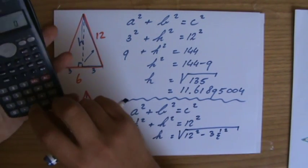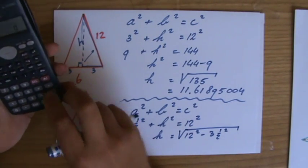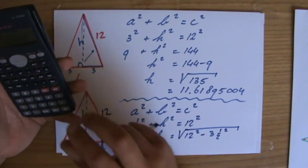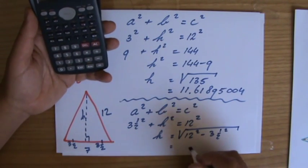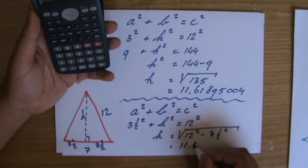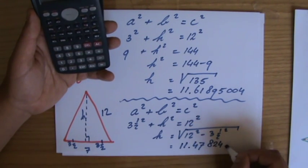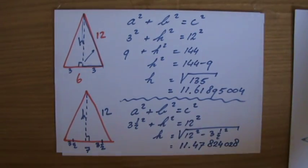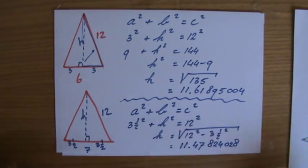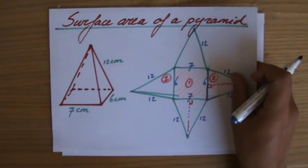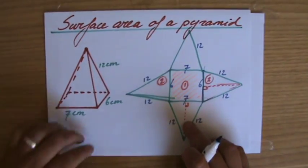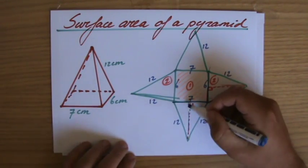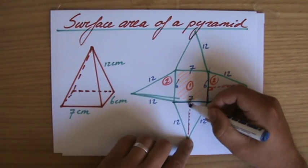I'm going to take my calculator. 12 squared, which of course is 144 minus 3.5 squared, and then the square root of that answer, and that is going to be 11.47824028. Still all the decimals, because I cannot round in the middle of my calculations. So, the area now of this triangle, which is the same as the area of that one, is going to be 7 times 11.47, and more decimals divided by 2.